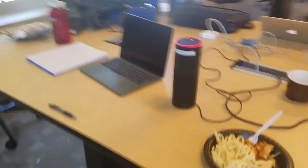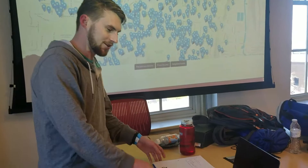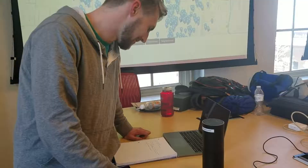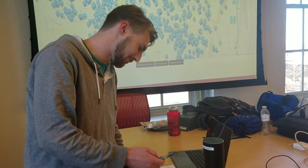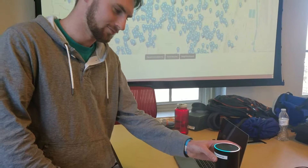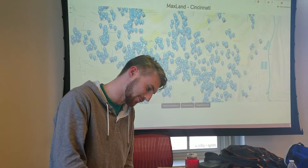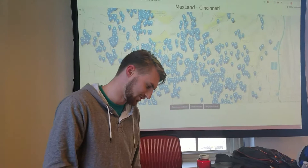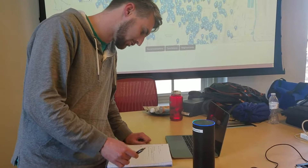So now we'll demo the Alexa skill. You can ask a couple different commands. We're going to ask Alexa for the minimum property value in East Price Hill. Alexa, ask MaxLand for the minimum property value in East Price Hill. The minimum property value in East Price Hill is $15,900. As you can see, it reads from our Alexa skill and is able to display the minimum property value. You can also do it with the average or max property value. Let's demo one last one: Alexa, ask MaxLand how many foreclosures there are in Clifton. The number of foreclosures in Clifton is six. So you can find out the exact number in each neighborhood of Cincinnati.